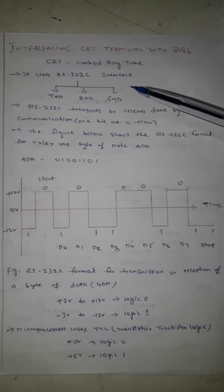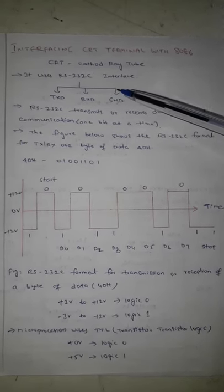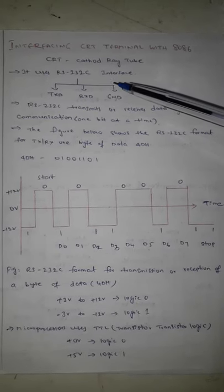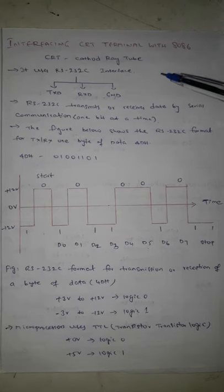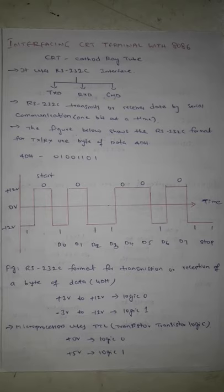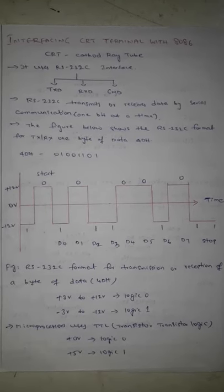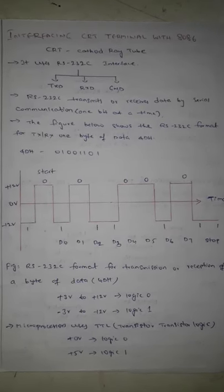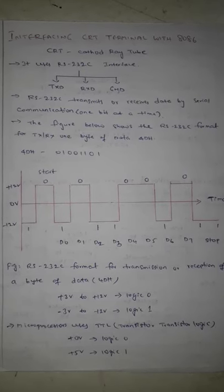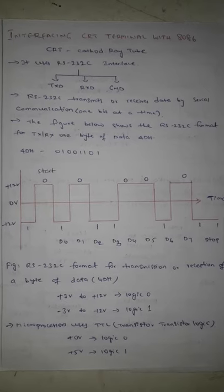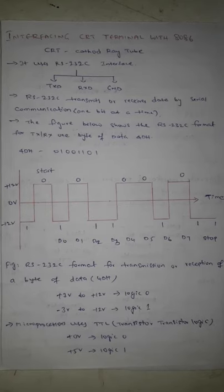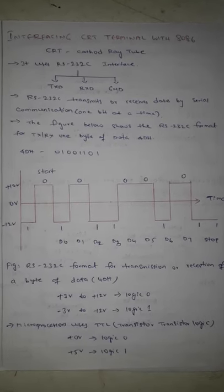These three signals — TXD, RxD, and ground — are used to connect the CRT terminal with the processor using RS-232C interface. RS-232 is a serial interface that performs serial communication; it transmits only one bit at a time. It cannot transmit or receive more than one bit at a time, so there is a specific format for transmitting and receiving data using RS-232C.